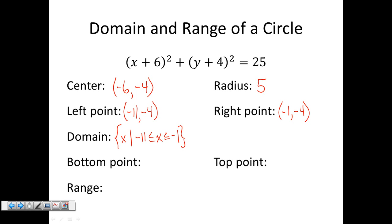My bottom point is five units down from my center at negative six comma negative nine. My uppermost point is five units up at negative six comma one. My range is the set of all y such that it's between negative nine and one. Pretty easy when I figure out my center, radius, and extreme points: leftmost, rightmost, top, and bottom points. Domain and range, pretty easy.